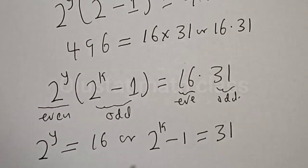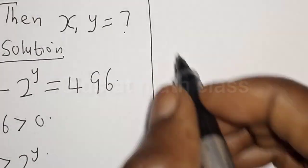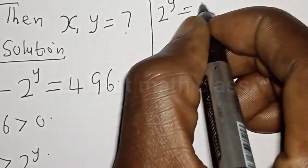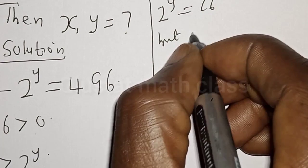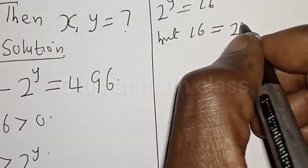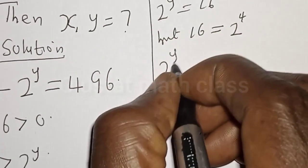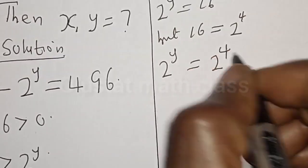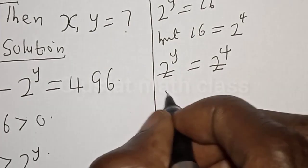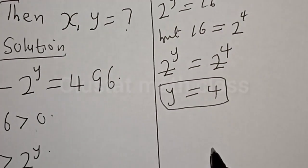Let's work with the first equation: 2 raised to power y is equal to 16. But 16 can be expressed as 2 raised to power 4. Then we have 2 raised to power y is equal to 2 raised to power 4. They have the same base, so y is equal to 4. We've gotten the value of y to be equal to 4.